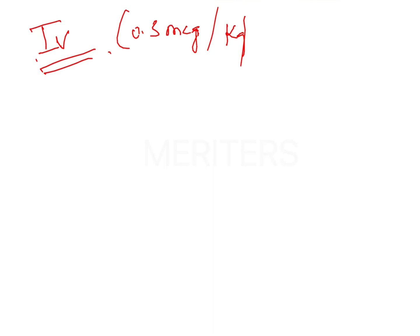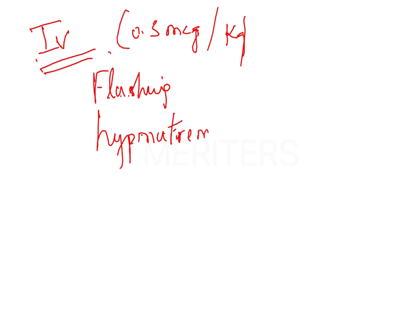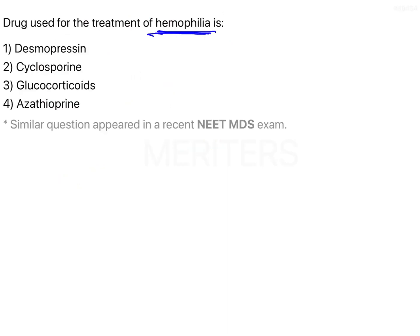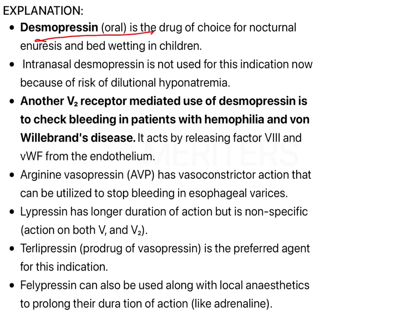The side effects of desmopressin include flushing, hyponatremia, and thromboembolism. Importantly, oral desmopressin is the drug of choice for nocturnal enuresis and bedwetting in children. When used intravenously, it is used for hemophilia, as it releases Factor VIII and von Willebrand factor from the endothelium.